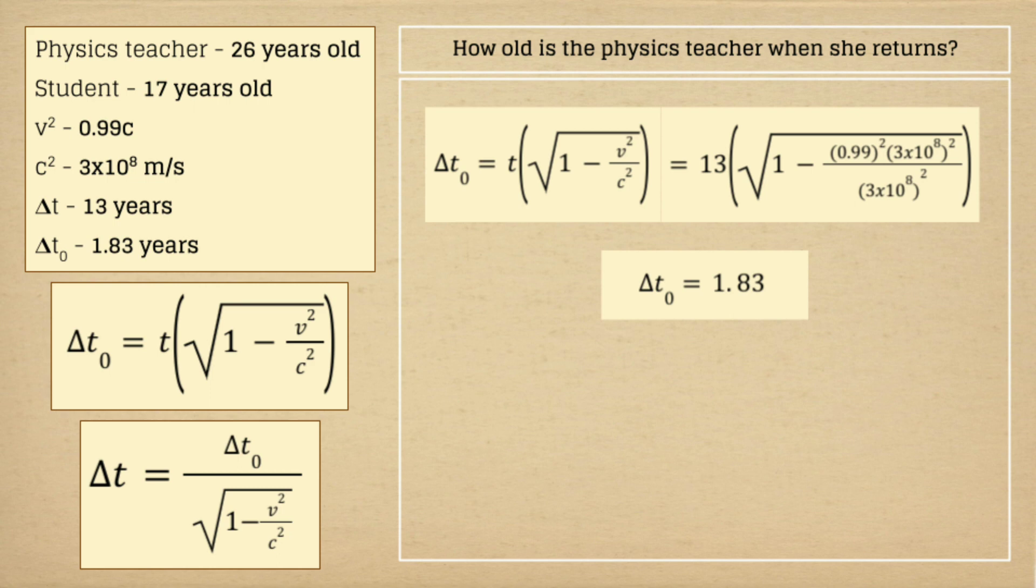Now, how can we calculate the physics teacher's current age? All we need to do is add this value of change in proper time to her age prior to the rocket trip. By doing that, we would find out that her age is now 27.83 years old, just a year older than when she left earth.